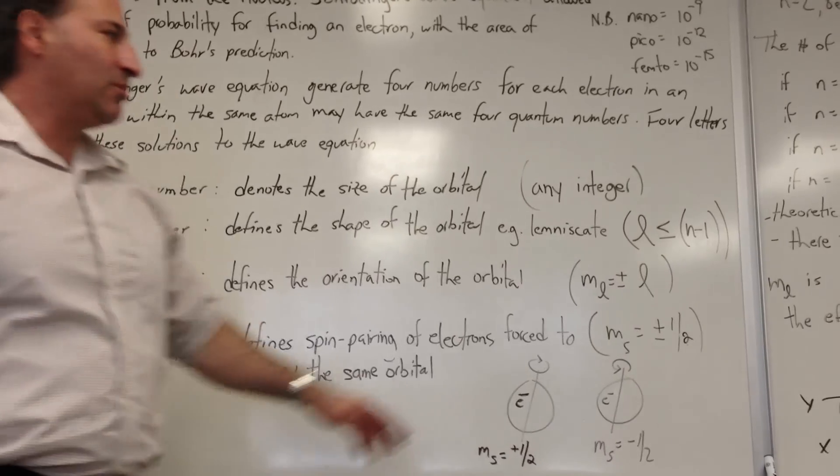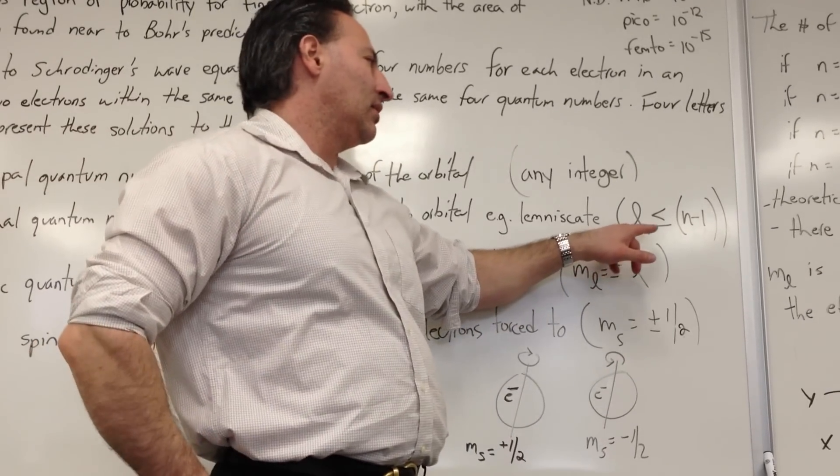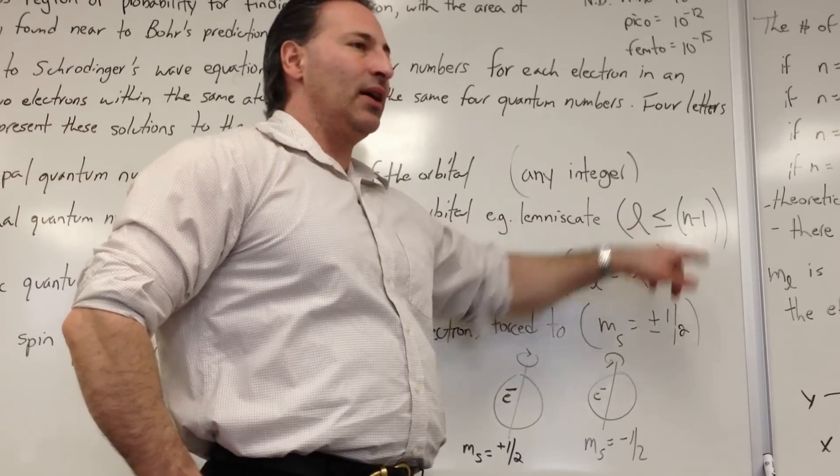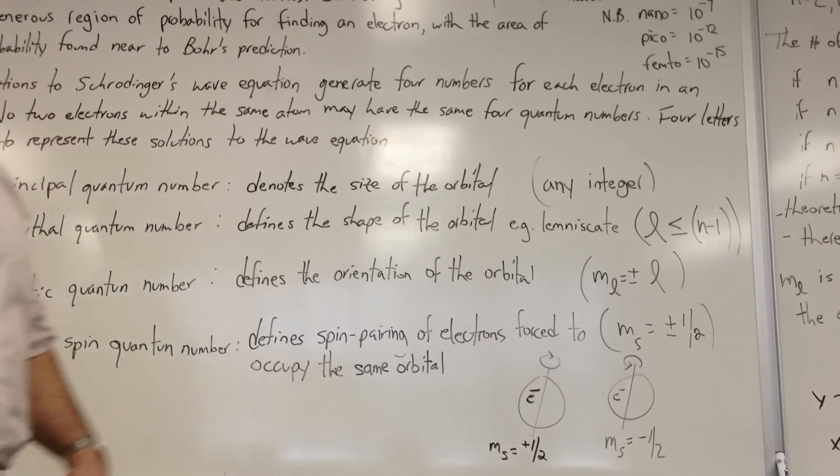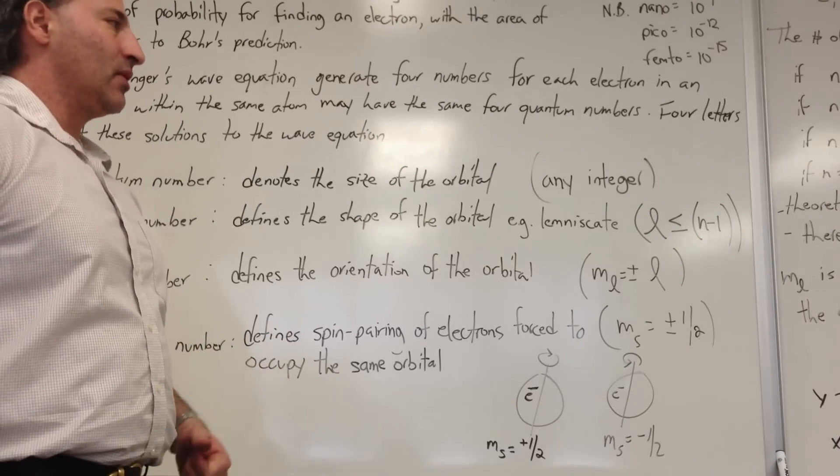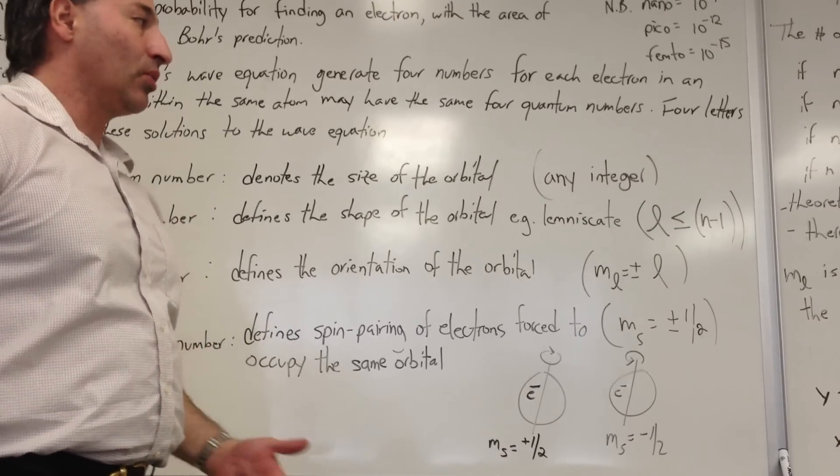The values for L can be anything less than or equal to n minus 1. So if n equals 2, the principal quantum number is 2, L can be 1 or 2, or 0.